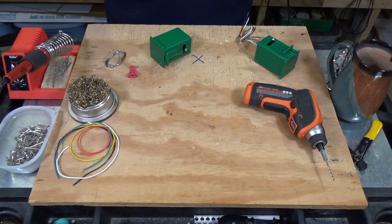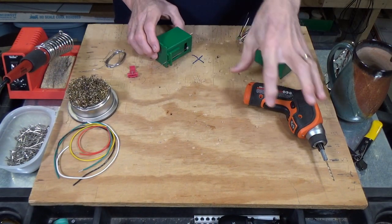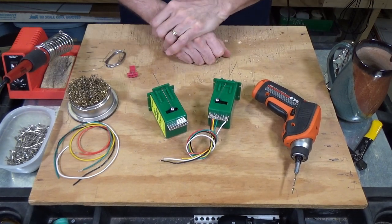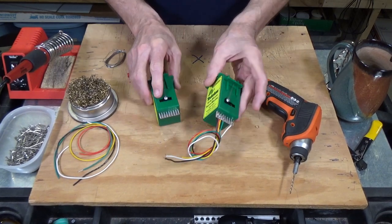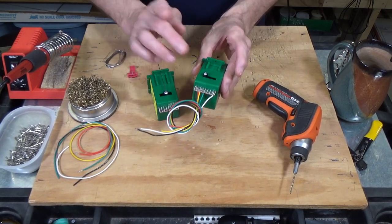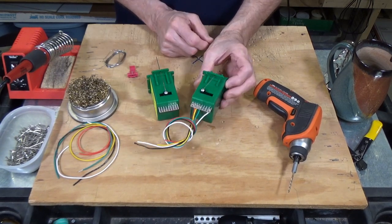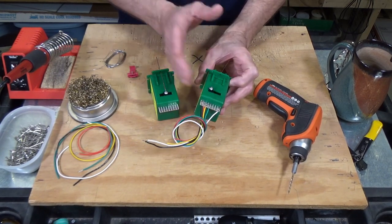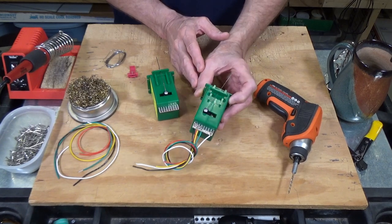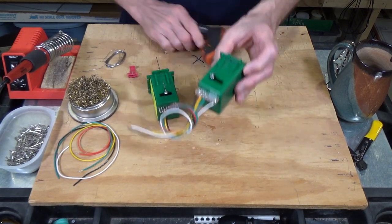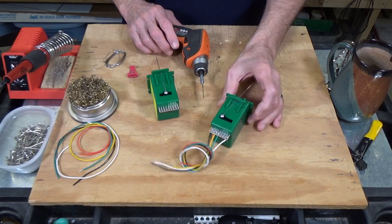I've gone ahead and zoomed in on the workbench so we can do the project I have lined up for today. Basically, preparing your tortoise switch machines so they're ready for installation. I do this with several of these in advance. I also keep them around in case I need to swap something out during an operating session or while I'm running trains if one of these fails.